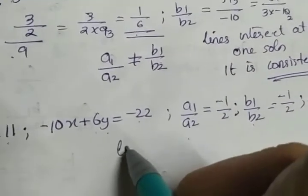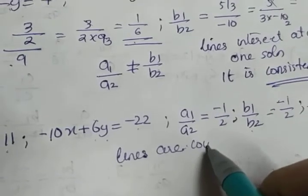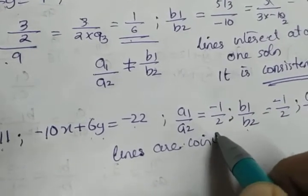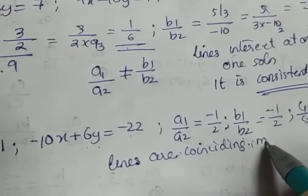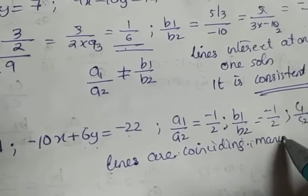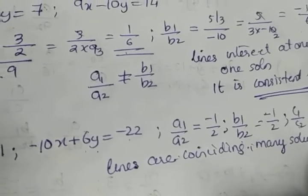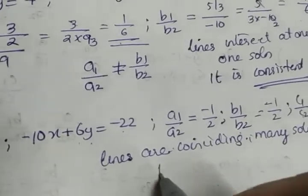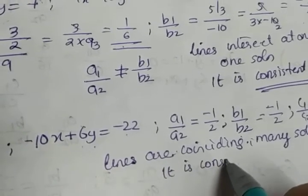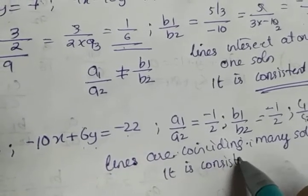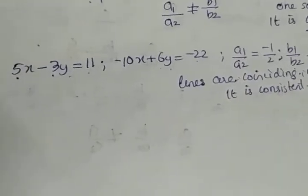What we can say is the lines are coinciding. Many solutions will be there. Since a solution exists, we can come to the conclusion that the equation is consistent.